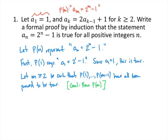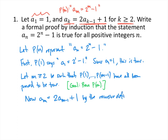So what do we know about a sub m? We have the recursive definition that a sub k equals 2 times a sub k minus 1, for k greater than or equal to 2. Since m is greater than or equal to 2, that recursive definition works for us. So a sub m equals 2 times a sub m minus 1, by the recursive definition. We also know that P of m minus 1 has been proved to be true — that a sub m minus 1 equals 2 to the m minus 1 minus 1. So we can substitute that in: we have 2 times the quantity 2 to the m minus 1 minus 1, plus 1.